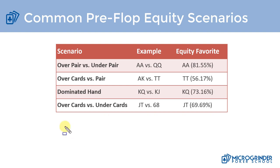Over cards versus under cards — for hands that aren't a pair — for example jack-10 versus 6-8: jack-10 is almost a 70 percent equity favorite. In terms of calling hands with a suited connector or off-suited connector, ideally we want to call with the suited connector. The higher up it is, the better, because it's going to have more equity.